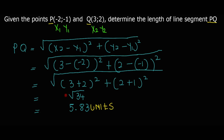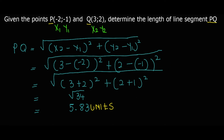So the distance PQ is 5.83 units. I advise always, if you substitute, to read the answer straight from the calculator to avoid mistakes — simplifying by hand can lead to a wrong answer. The answer is expressed in this way.